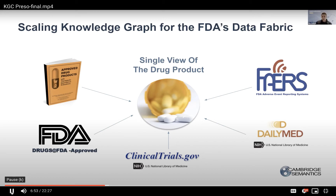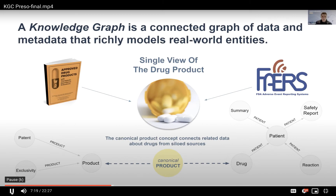In order to move more quickly, organizations naturally want to create single views of key entities like a drug product coming from these different sources. But the data is diverse, much of it is unstructured, and there are different namings and relationships. A knowledge graph delivered at scale can connect all this data together and allow them to ask questions, do analytic use cases, and deliver combinations of data to end users in a highly rapid iterative fashion as data volumes grow and new use cases come on board. A knowledge graph — which we often define as a connected graph of data and metadata to richly model real world entities — is a really good way to create this single view of a drug product.